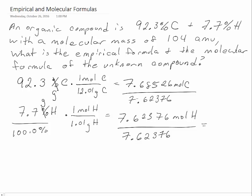When we divide the hydrogen, of course we get 1. For the carbon, we get 1.0081. That is within 0.1 of an integer, and so we are allowed to round that to 1. This means that our empirical formula is simply CH.